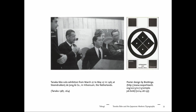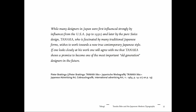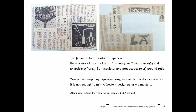Peter Brattingham met Tanaka in New York and immediately invited him to give a talk at Pratt Institute, where Tanaka showed his work. Later, Brattingham invited Tanaka to the Netherlands for an exhibition at the gallery space of his parents. Brattingham was a very important person who gave Tanaka a view from outside — how he was perceived by international audiences. Brattingham even wrote an article about Tanaka in the magazine Gebrauchsgrafik from 1964, already describing him as a contemporary Japanese designer who would belong to the older generation — foreseeing Tanaka's future.